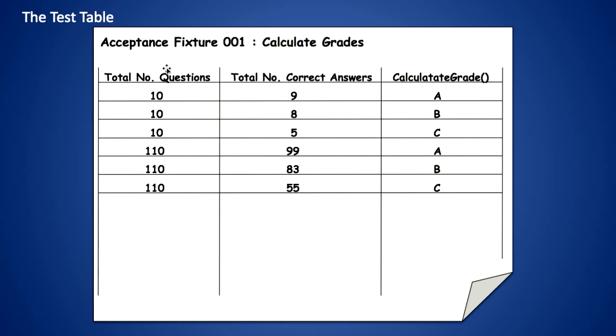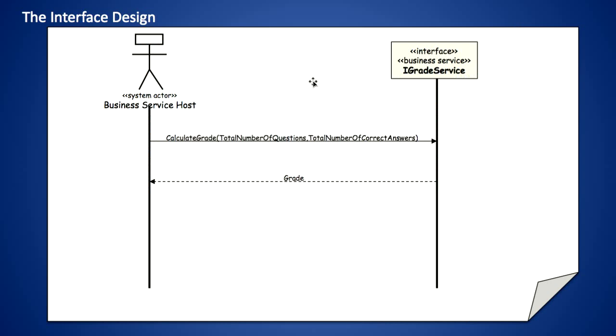The format for this is important because we also begin to design. We have a calculate grade operation here with some potential candidates for arguments that would be passed to that operation. We can use this also in our agile modeling when designing our business services and interfaces. We can see we're going to have some kind of business service host which calls the calculate grade operation on this interface, which we're going to call the i grade service.